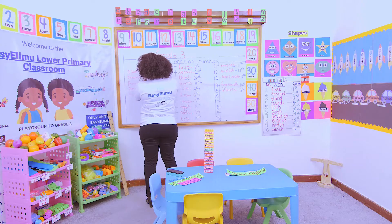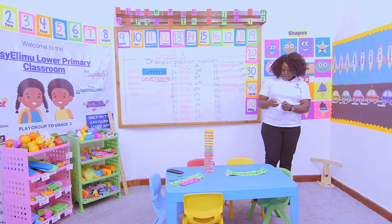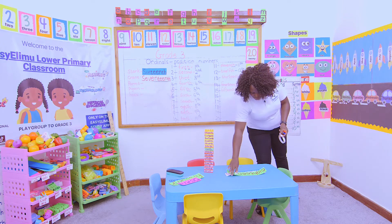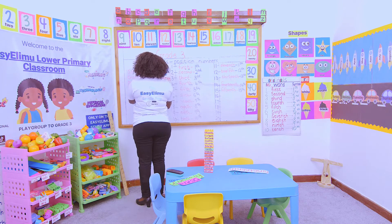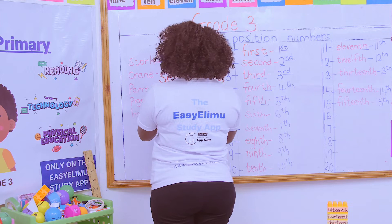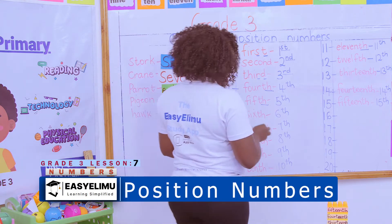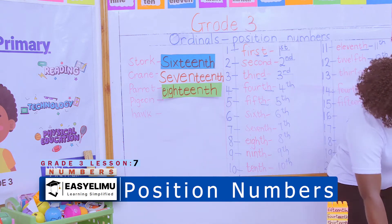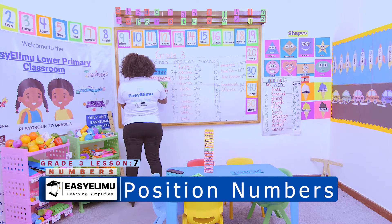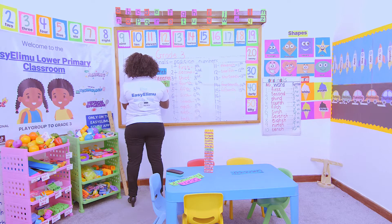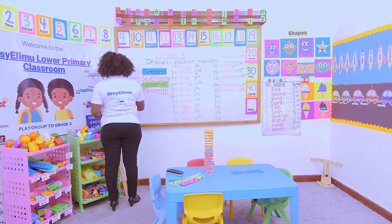The stork appeared in the 16th position. Then the crane appeared in the 17th position. The parrot appeared in the 18th position. The pigeon appeared in the 19th position. And lastly, the hawk was in the 20th position.